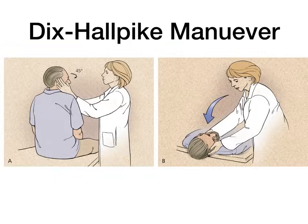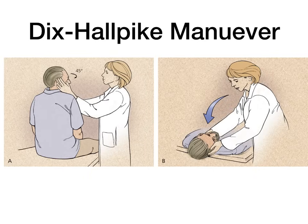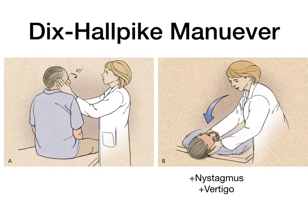To diagnose BPPV, you perform the Dix-Hallpike maneuver — very high yield and something you can do on clinical rotations. You seat the patient, turn their head 45 degrees toward you, then lean them back on the exam table with their head in extension off the table while maintaining that 45-degree angle. This causes the dislodged otolith to enter the semicircular canal, reproducing vertigo. If you observe nystagmus and reproduce the vertigo, it's a positive Dix-Hallpike and you've diagnosed BPPV.